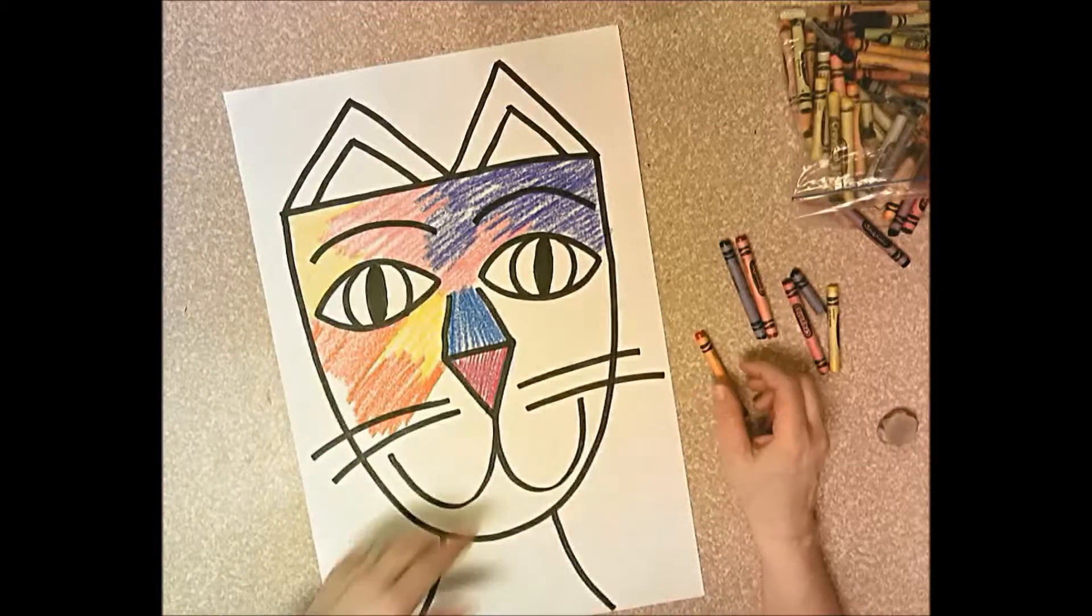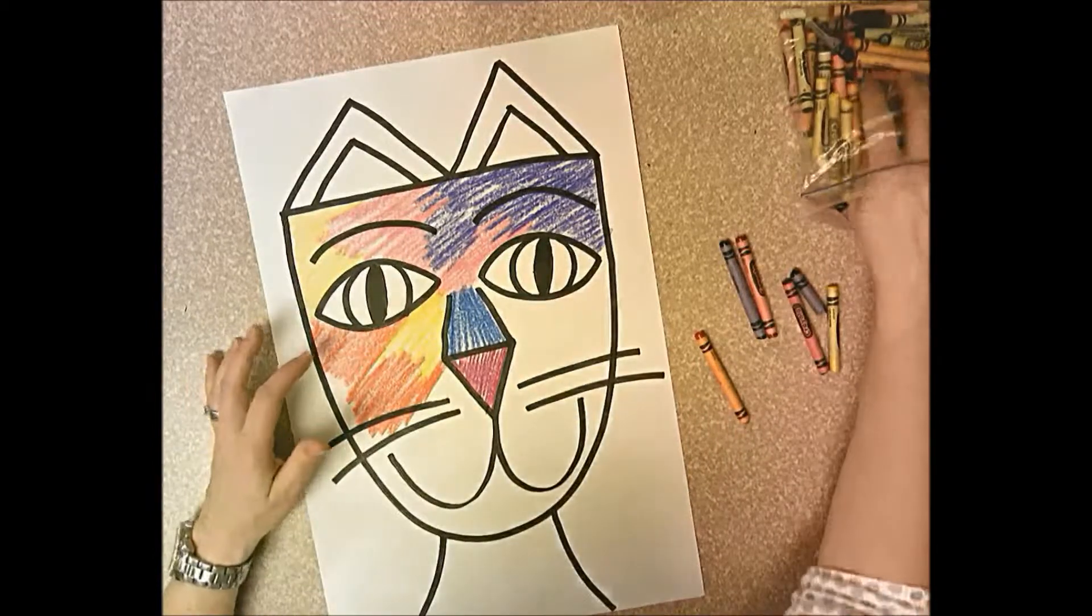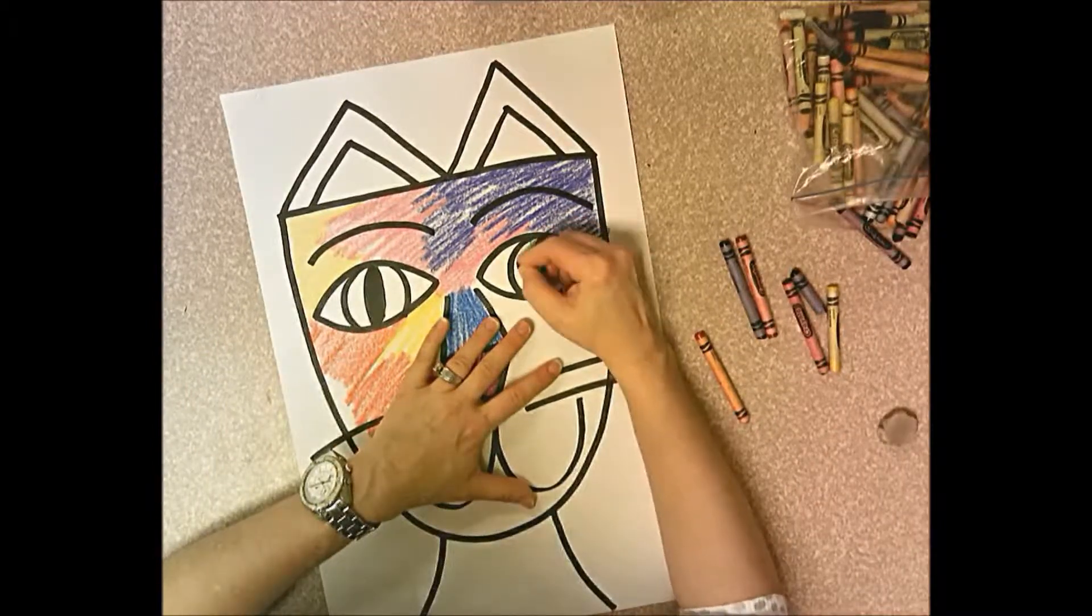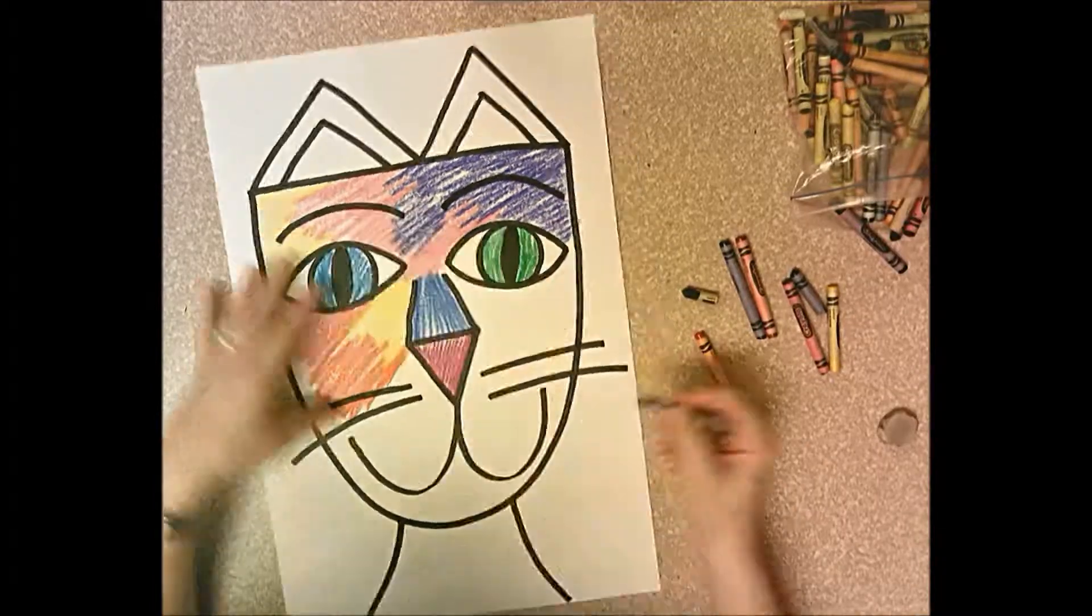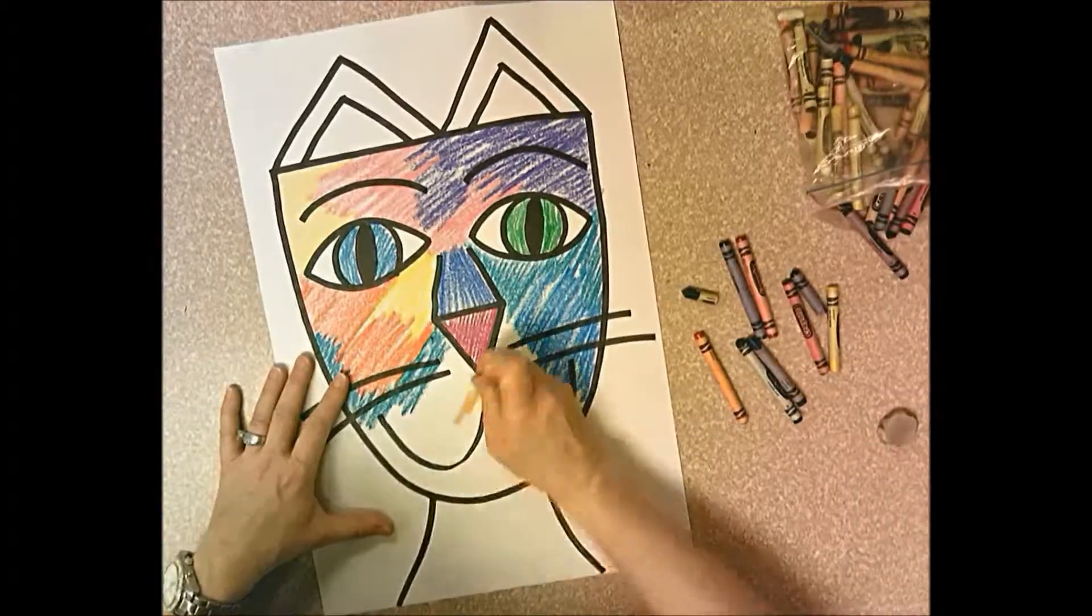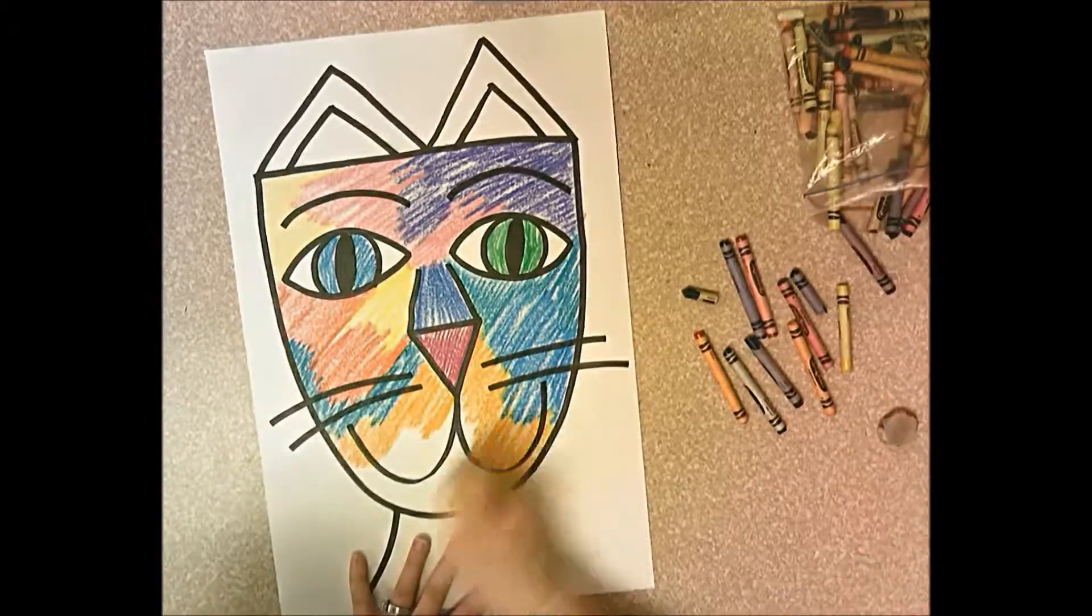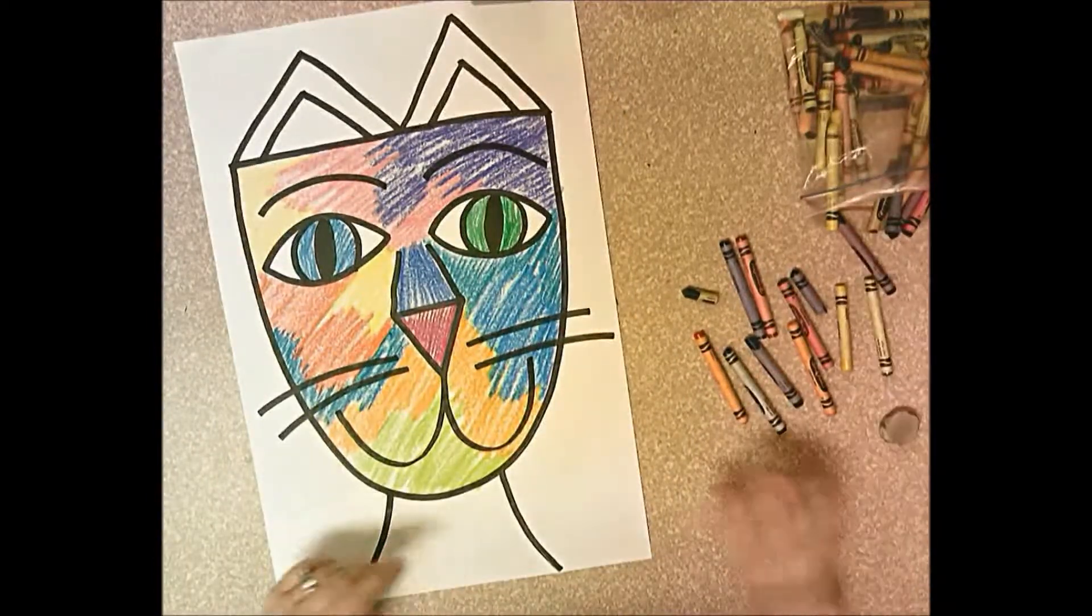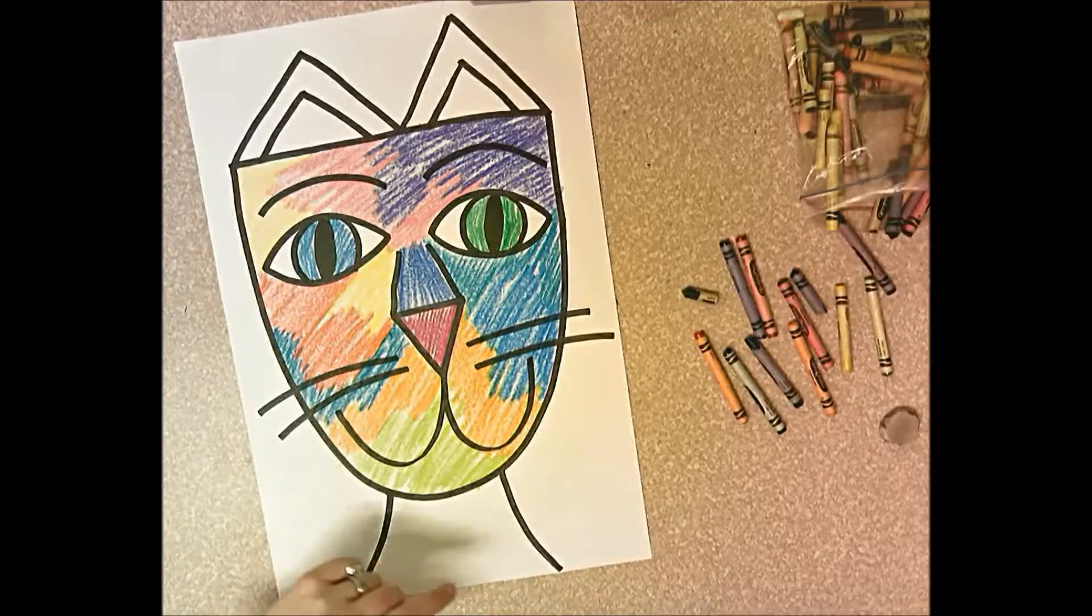Now you're not going to color the whole eye in, but you're going to color the circle part of the eye. And you're going to keep coloring until your cat looks like this.